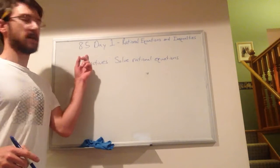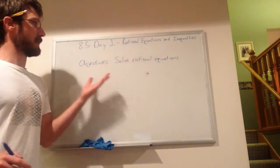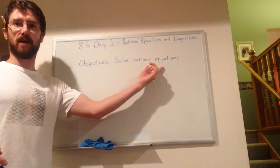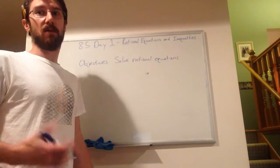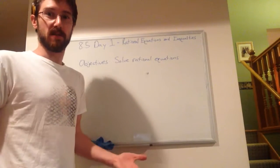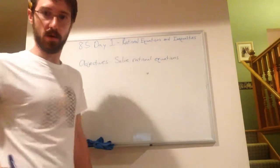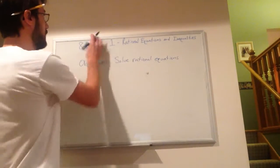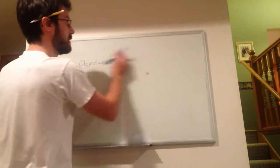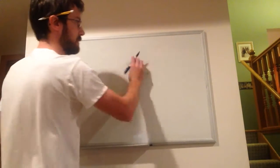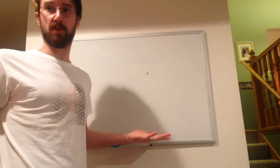Alright, so Section 8-5, Day 1, Rational Equations and Inequalities. Today, our objectives are solving rational equations. Tomorrow, when I get back, hopefully I don't have to pick up too many pieces, and we can just jump right into rational inequalities. So here we go. Start out, we're going to go through five examples and one vocab term kind of in the middle, and hopefully by the end of it, we know what we're doing with these.